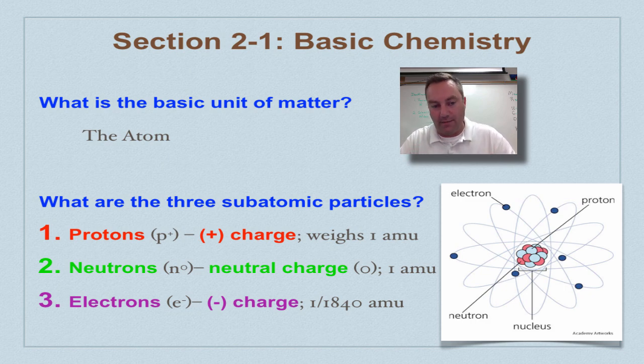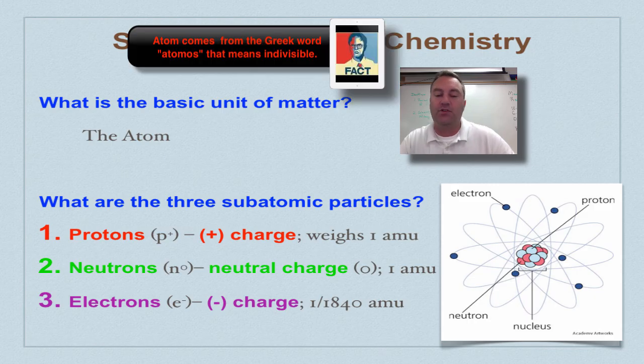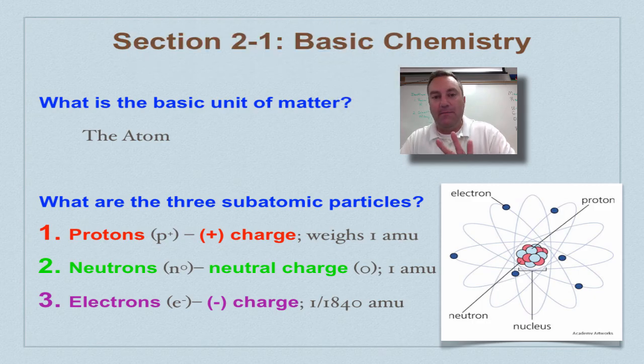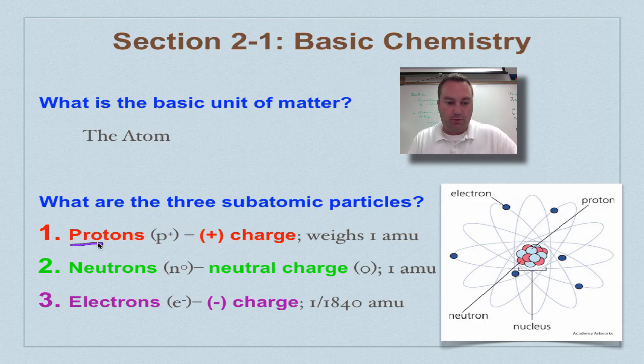When we talk about chemistry, we need to start talking about the atom. The atom is the basic unit of matter. You can't get anything less than an atom when it comes to really everything in the universe. The atom has three main atomic particles listed right down in here: protons, neutrons, and electrons.